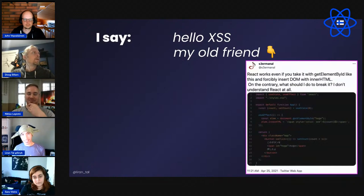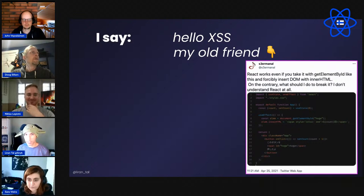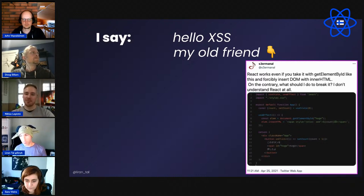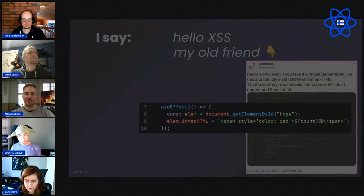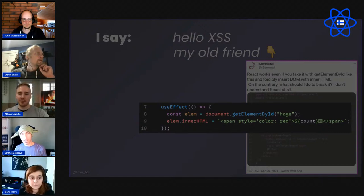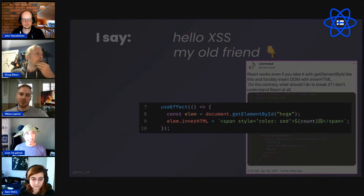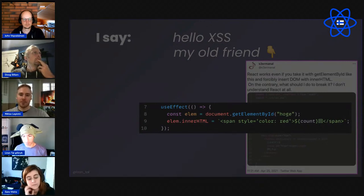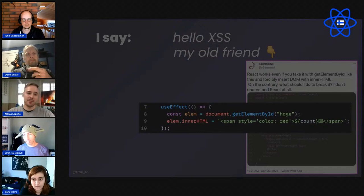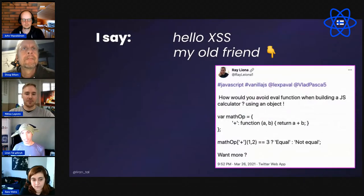Hello XSS my old friend — because people are still doing weird things on the web even when using React, Vue, Angular, and other modern frameworks. For example, people use the useEffect hook in React but then use the native DOM API's innerHTML to take a count variable and push it directly in. What happens when that variable is user-controlled? Things go bad.